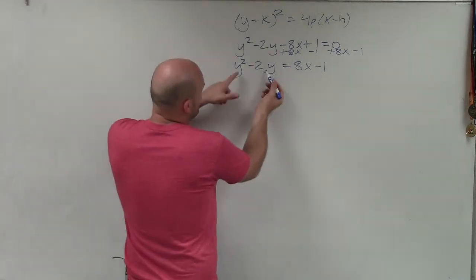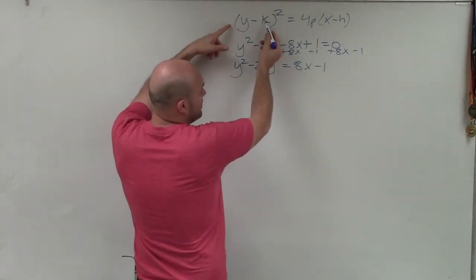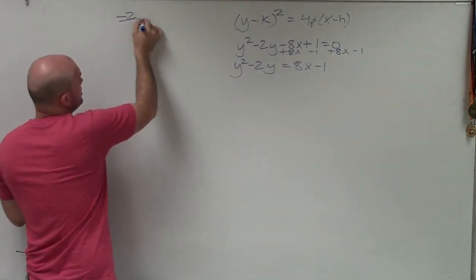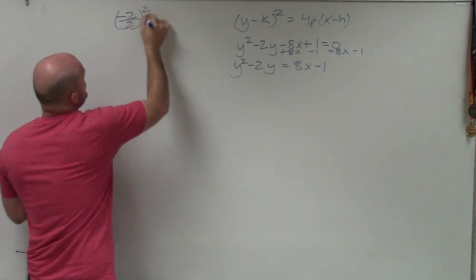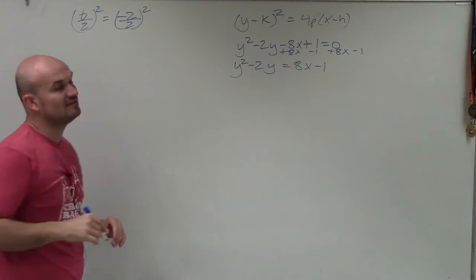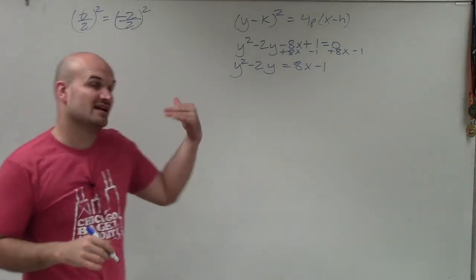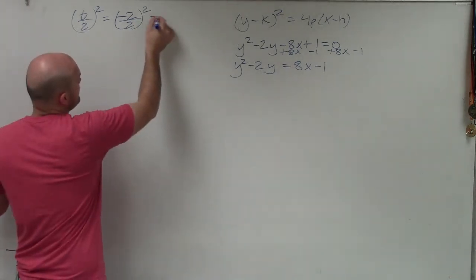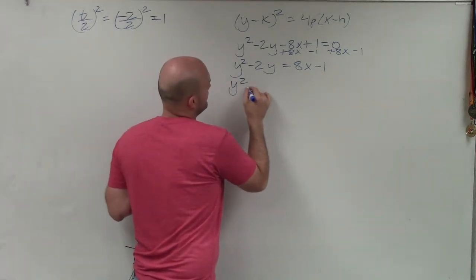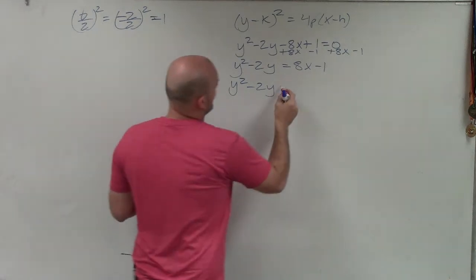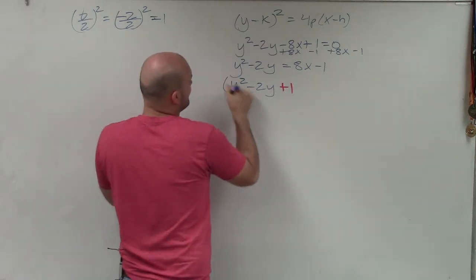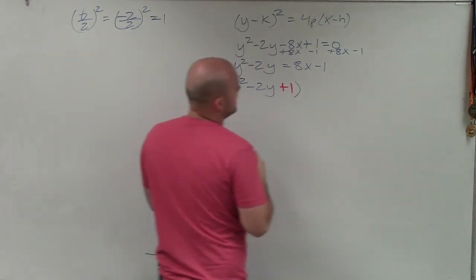Now what I need to do is rewrite this as a binomial squared. To do that, I need to create a perfect square. To create a perfect square, I take my middle term, divide it by 2, and square it — otherwise known as (b divided by 2) squared. So negative 2 divided by 2 is negative 1, and negative 1 squared is positive 1. So now I have y squared minus 2y, and I add 1 — which I just created. And if I add 1 to the left side, I've got to add 1 to the right side as well.